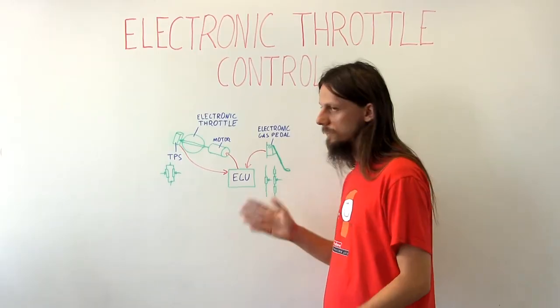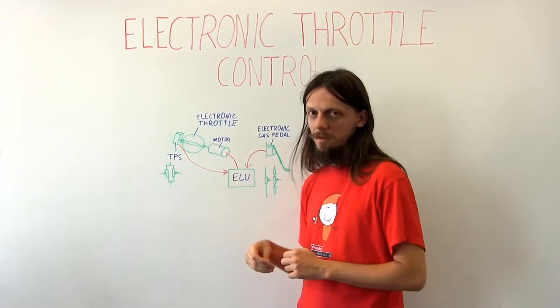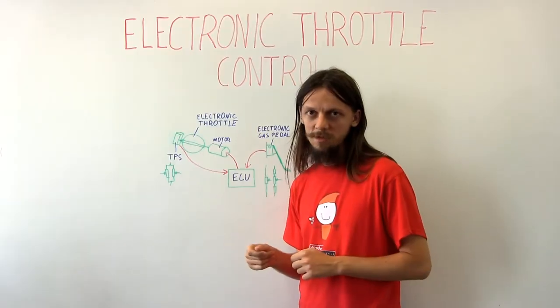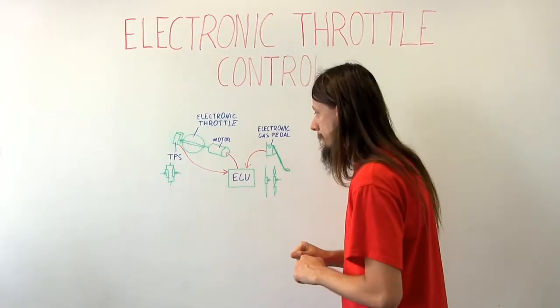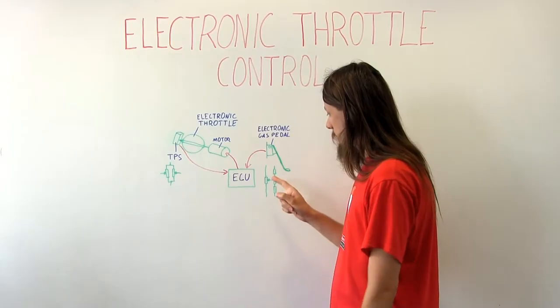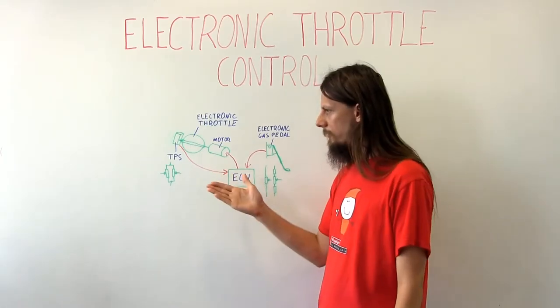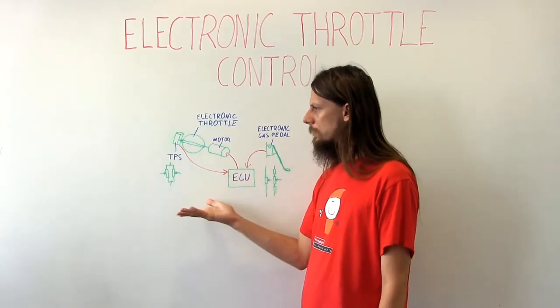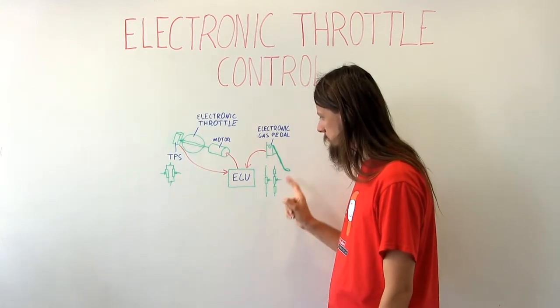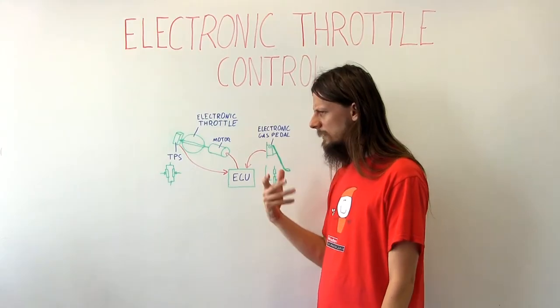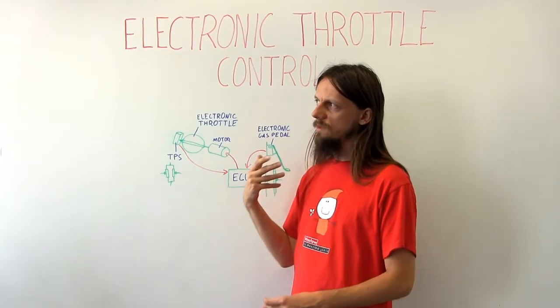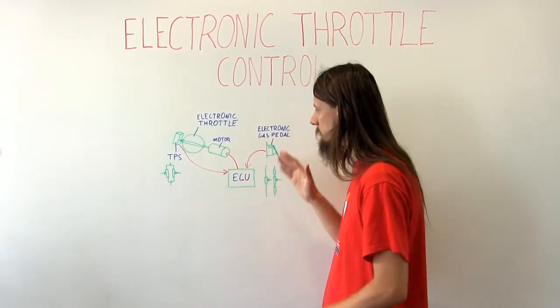Of course, if both are broken, then the ECU cannot detect the position of the pedal or the throttle anymore, and it will just stop the car. Usually those potentiometers will have different characteristics or work in opposite ways or something like that. It makes it a bit easier for the ECU to be sure what's going on with the position of those two.